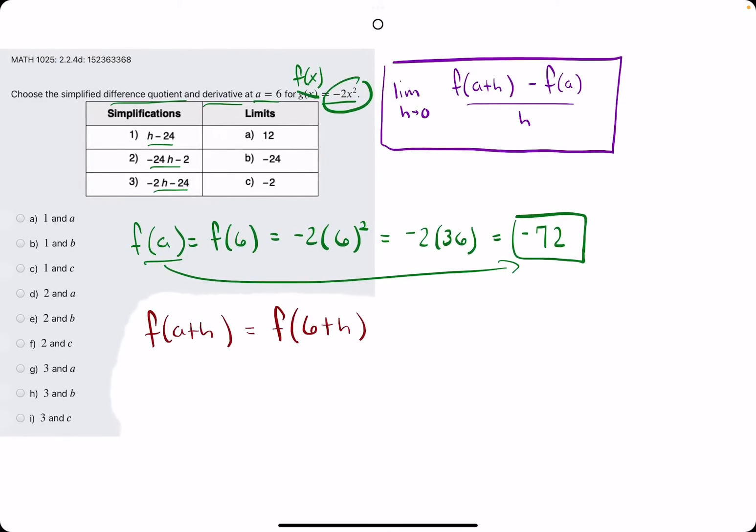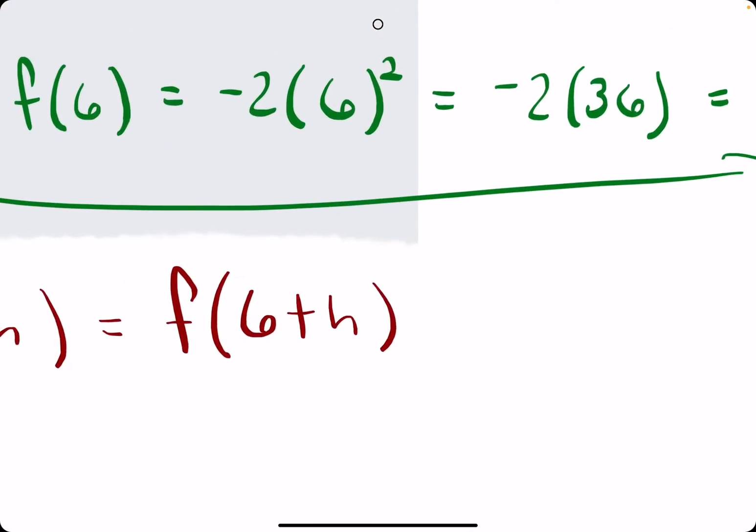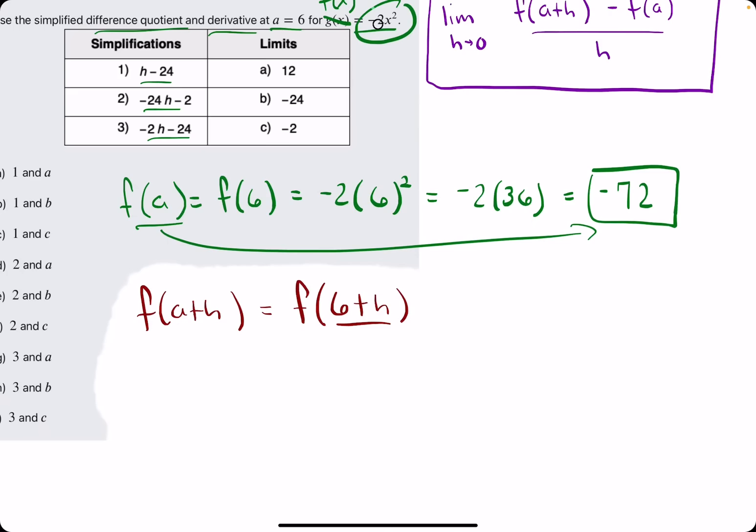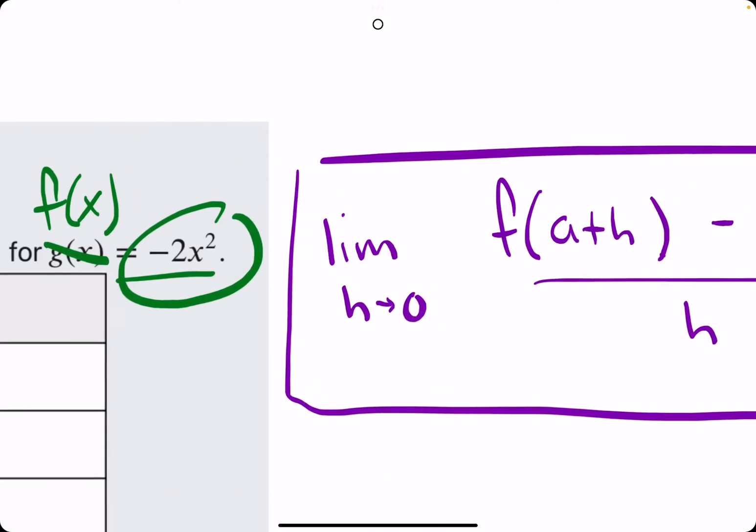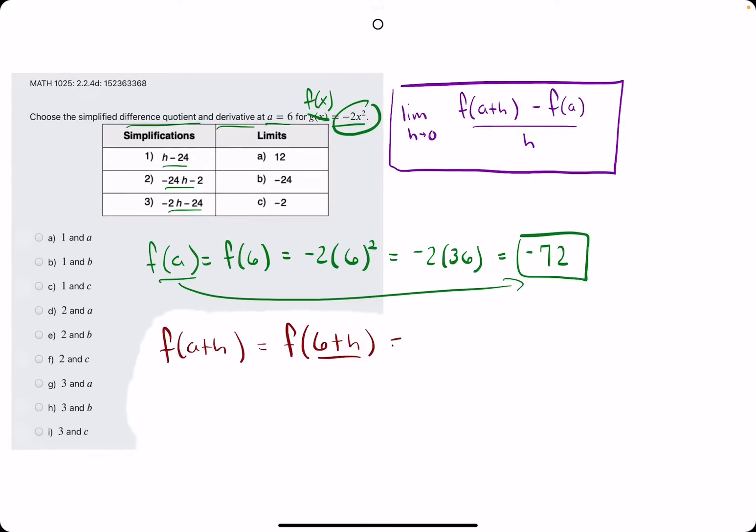And so, as in the other difference quotient problems, whatever is inside the parentheses here, 6 plus h, we are going to substitute that in for x in the equation. So f of 6 plus h is negative 2 times, in parentheses, 6 plus h squared.